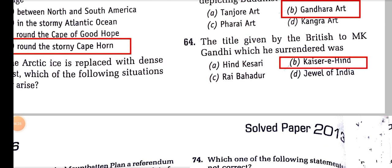The title given by the British to M.K. Gandhi, which he surrendered, was 'Kaiser-i-Hind'.